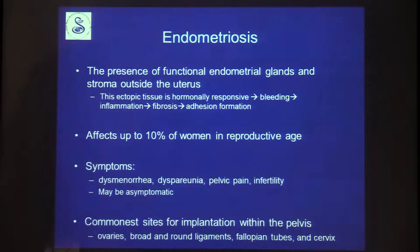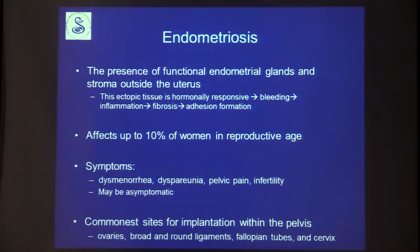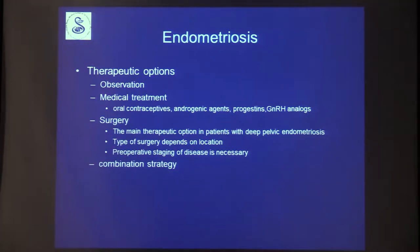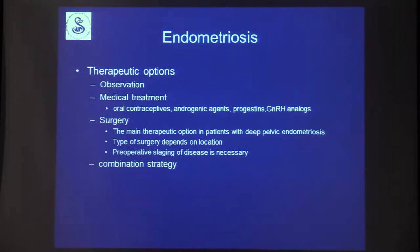The commonest sites for implantation within the pelvis are the genital organs: the ovaries, the broad and round ligaments, fallopian tubes, and the cervix. There are a few therapeutic options depending on location and extent. Many women receive medical treatments — hormonal oral contraceptives or other hormonal treatments — but for deep pelvic endometriosis, the main therapeutic option is surgery, and for that MRI is very good for preoperative staging.